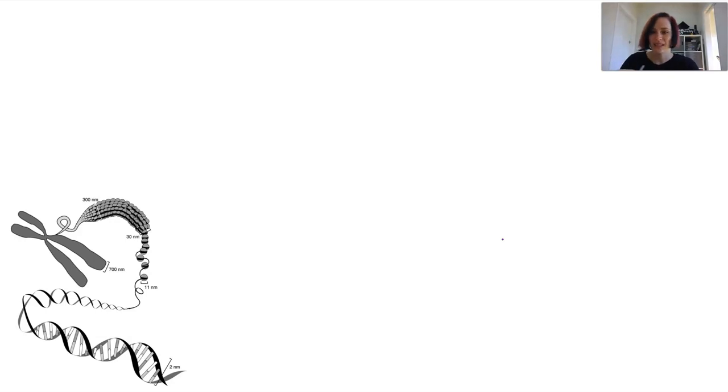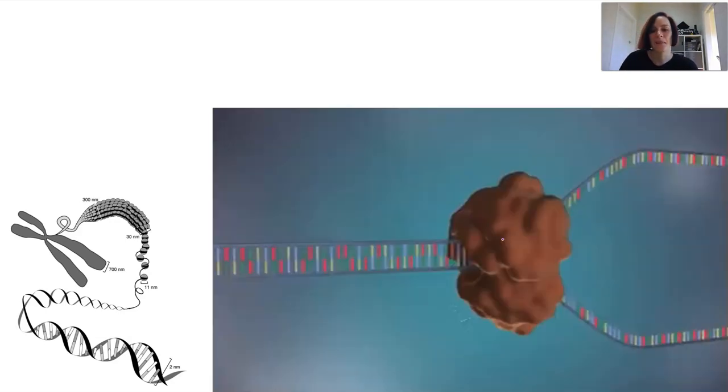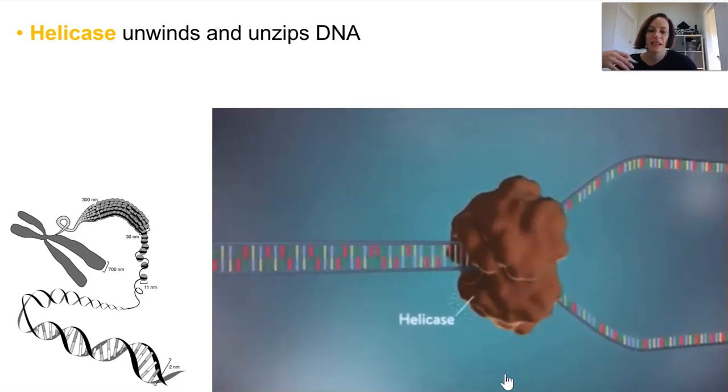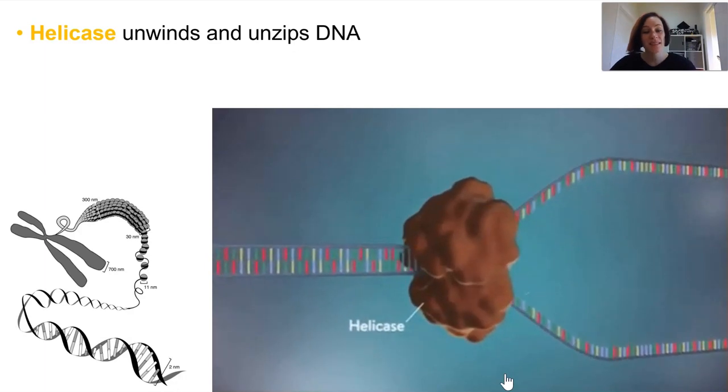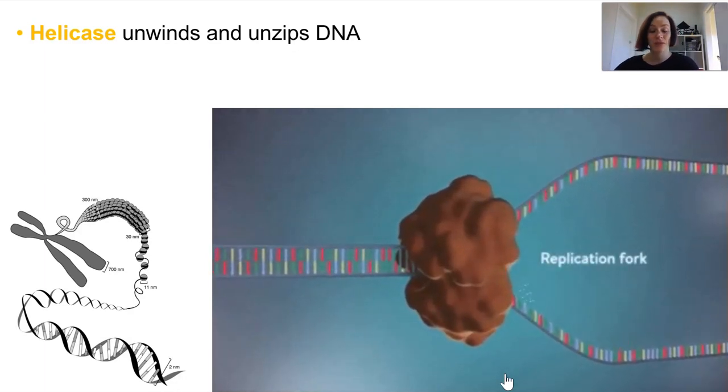First, the DNA strand must be unwound slightly, not the whole thing, just bits of it, and then unzipped. And an enzyme known as DNA helicase or helicase actually unwinds it and breaks down the hydrogen bonds between the base pairs. So what this does is it actually exposes the nitrogenous bases and creates what's called a replication fork.